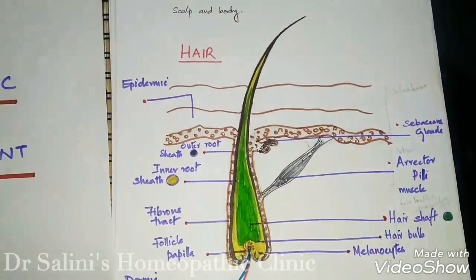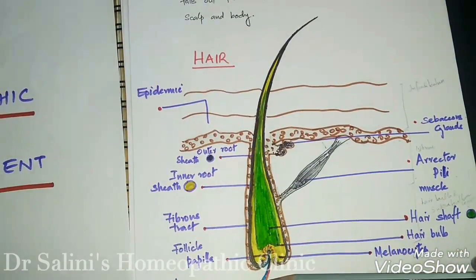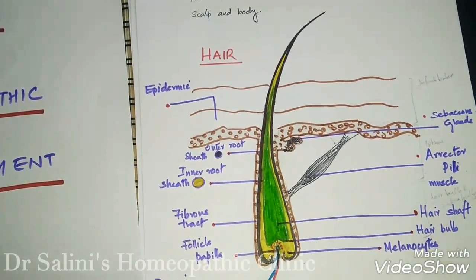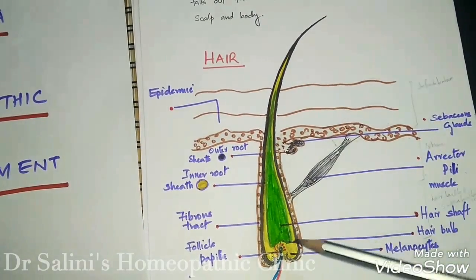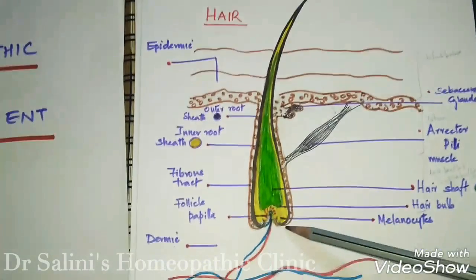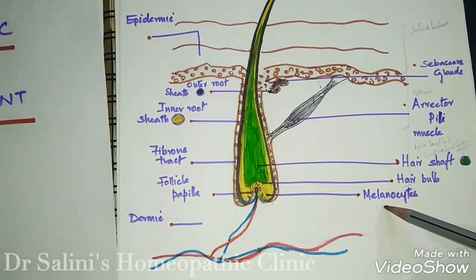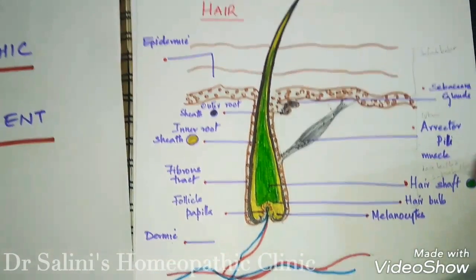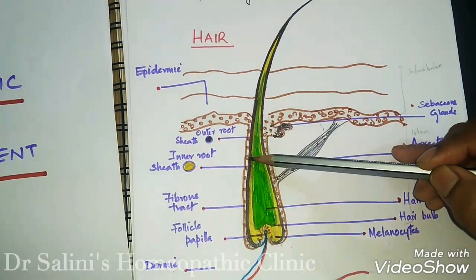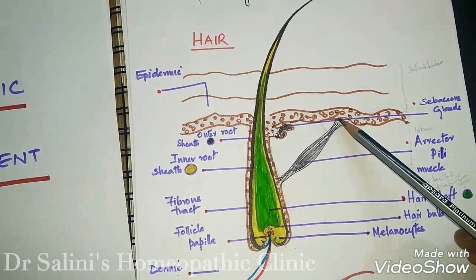Let's see the basic anatomical structure of hair. Hair is divided into the infundibulum, the isthmus part, supra bulbar, and the hair bulbar part. The hair has a hair bulb, hair shaft, and the dermal papillae or follicle papillae. This dermal papillae gets blood supply and is also rich with melanocytes, whose quantity determines the color of the hair shaft. Hair is covered by two sheets: the outer root sheath and the inner root sheath.